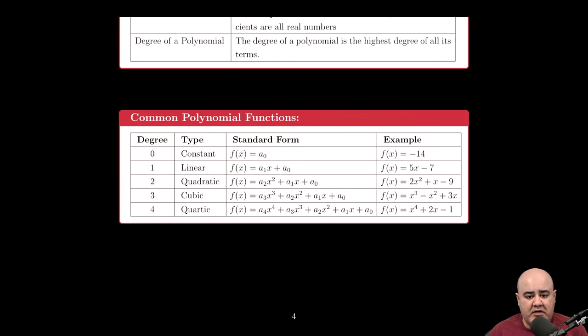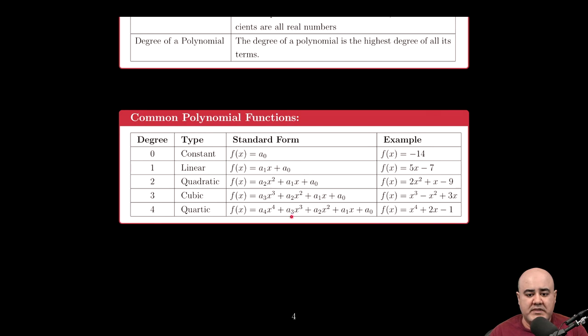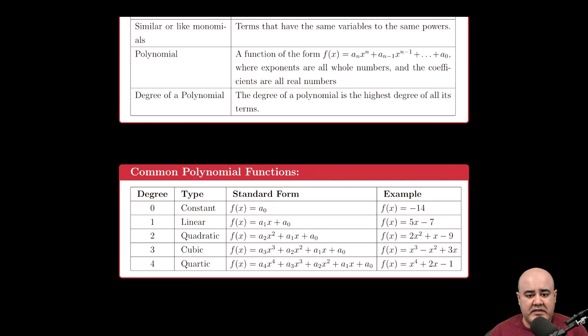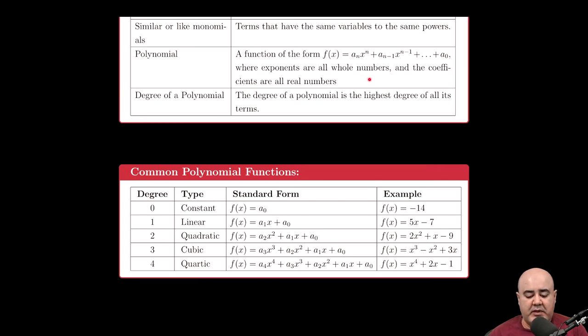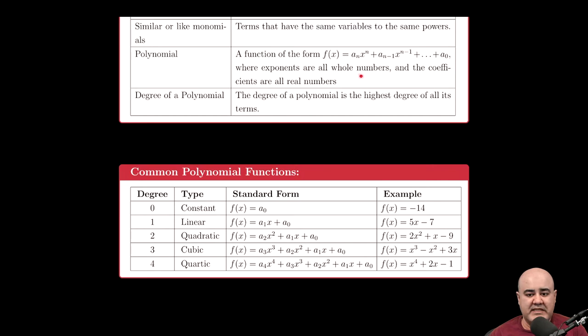So if we look back here, all the standard forms have decreasing degrees of x: 2, 1, 0, 3, 2, 1, 0, 4, 3, 2, 1, 0. And as a reminder, all the exponents of polynomials are whole numbers. So that's going to be really the thing that sort of sets things apart.